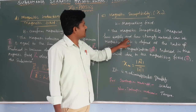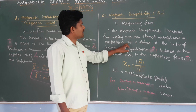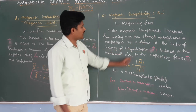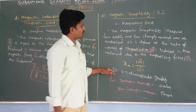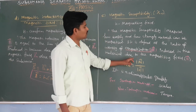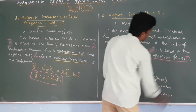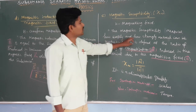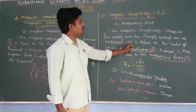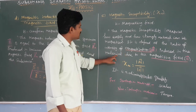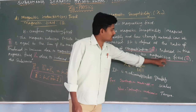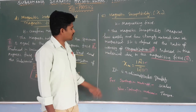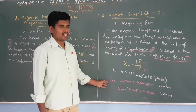Magnetic susceptibility is defined as the ratio of the intensity of magnetization induced in the material to the magnetizing field. It measures how easily or how strongly a material can be magnetized. Magnetic susceptibility is a dimensionless quantity.